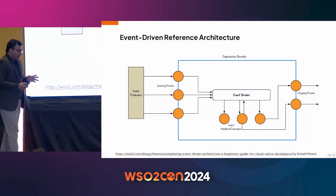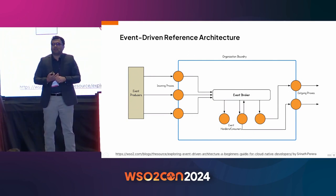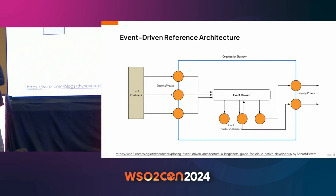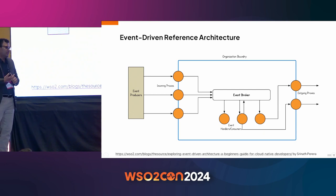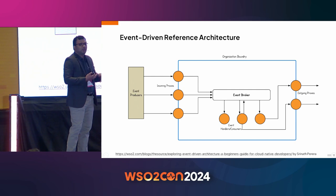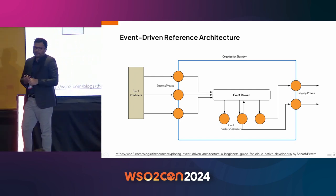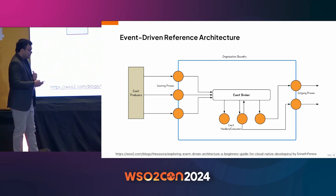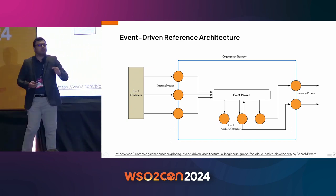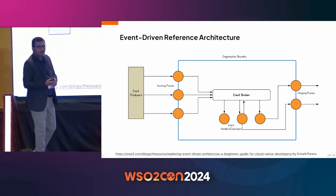Now, in my ten years working in event-driven applications and architectures, I have never seen event brokers exposed to the external world outside the organization. The event broker remains within the organization boundary. So the next question is: how do you get events from outside the organization boundary, and how do you send events to the outside? There are two things — incoming and outgoing.